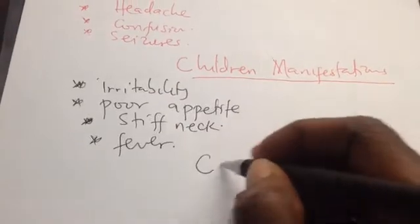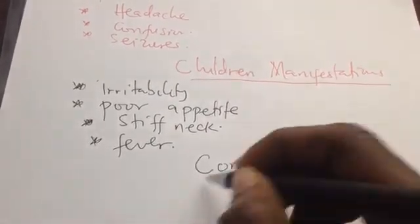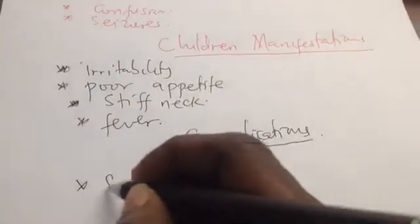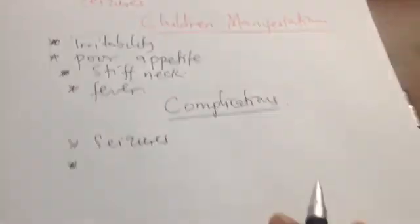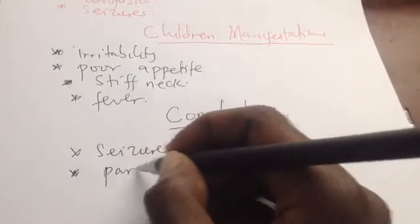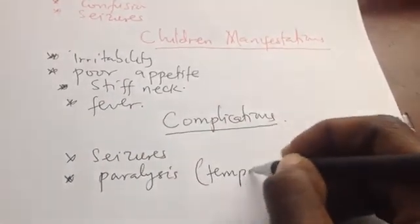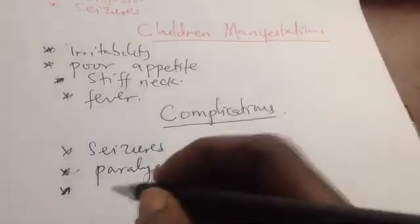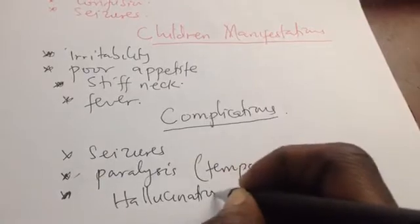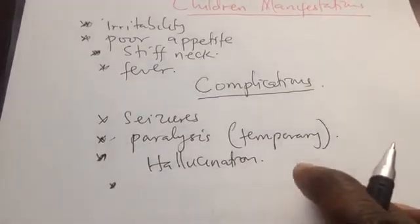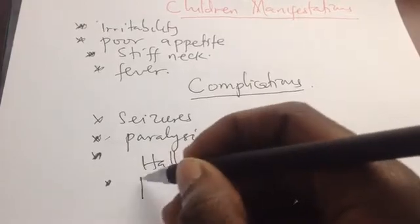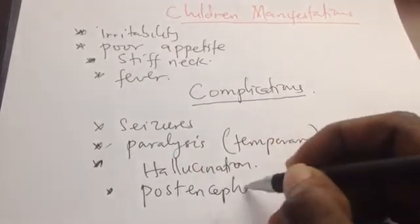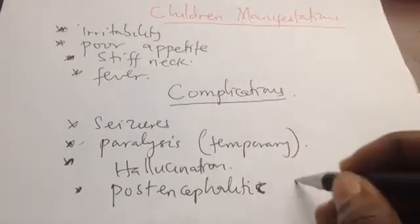Let us see some complications of encephalitis. Number one is seizures. It may also cause temporary paralysis. In adults, it may mimic a stroke, and there can be hallucinations. In elderly patients, later in life they may manifest Parkinsonian symptoms — a complication called post-encephalitic Parkinsonism.